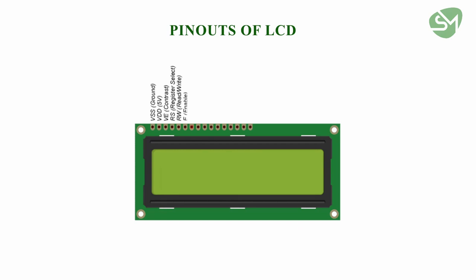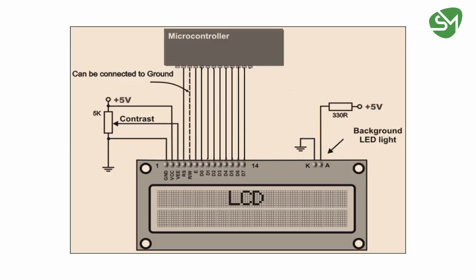The next pin is the enable pin, which is the clock enable pin of the LCD — for either reading or writing, we need to enable this bit. The next 8 pins are D0 to D7, which are the data lines of the LCD through which we pass data. The next pin is the anode of the backlight, followed by the cathode of the backlight. This is the circuit for interfacing this LCD to a microcontroller.